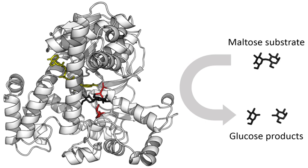Enzymes must bind their substrates before they can catalyze any chemical reaction. Enzymes are usually very specific as to what substrates they bind and then the chemical reaction catalyzed. Specificity is achieved by binding pockets with complementary shape, charge, and hydrophilic/hydrophobic characteristics to the substrates. Enzymes can therefore distinguish between very similar substrate molecules to be chemoselective, regioselective and stereospecific. Some of the enzymes showing the highest specificity and accuracy are involved in the copying and expression of the genome. Some of these enzymes have 'proofreading' mechanisms, where an enzyme such as DNA polymerase catalyzes a reaction in a first step and then checks that the product is correct in a second step. This two-step process results in average error rates of less than one error in 100 million reactions in high-fidelity mammalian polymerases.